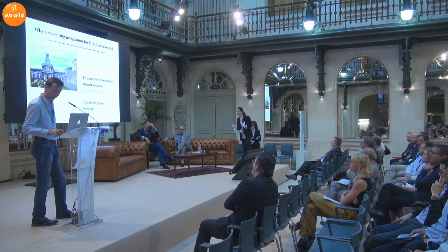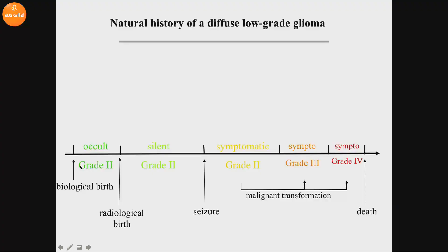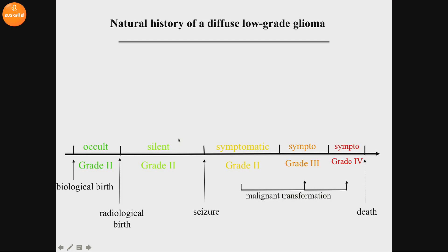We start with the screening program for Diffuse Low-Grade Glioma. Briefly, the natural history of Diffuse Low-Grade Glioma involves several periods: an occult period just after the biological birth, but you cannot see it on the MRI. Then a silent period where the glioma can be detected on MRI but there are absolutely no symptoms. And then usually a seizure entering the symptomatic phase of the disease, followed by malignant transformation and death.